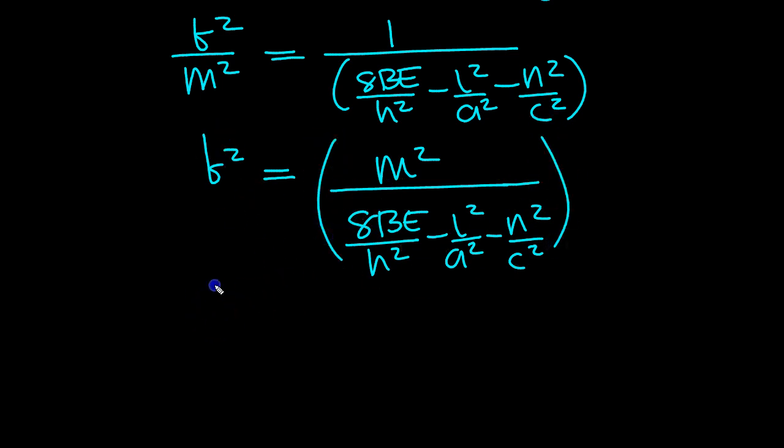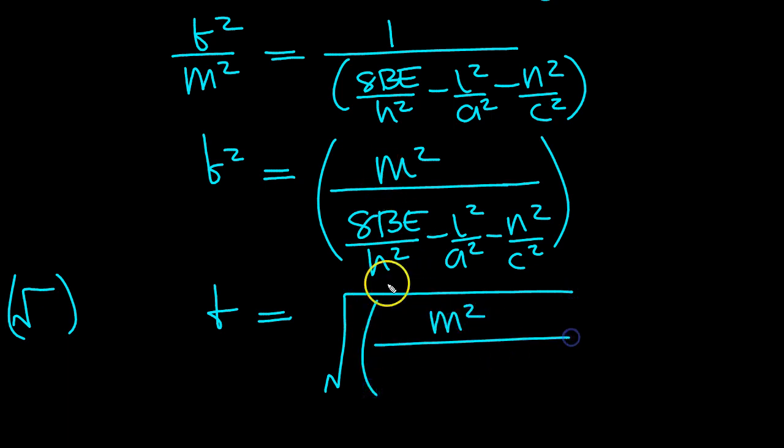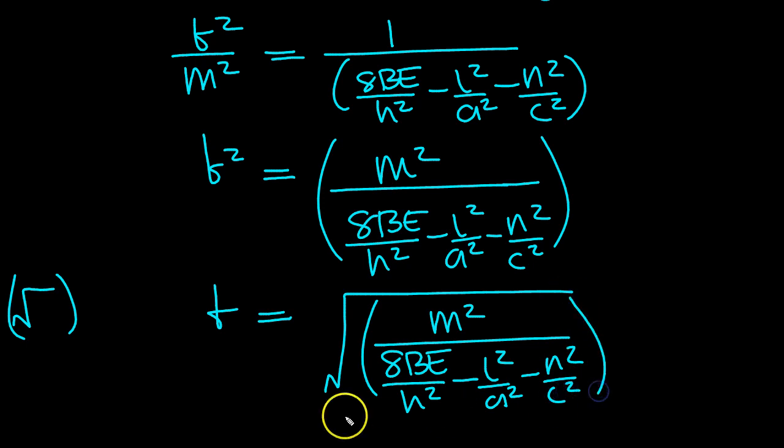And then we can just square root it. So square root of both sides then gives B on the left equals the square root of the whole thing. M squared on the top, over 8BE over H squared minus L squared over A squared minus N squared over C squared. There we go, that's B.